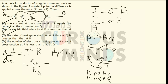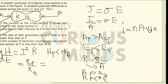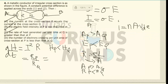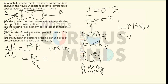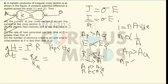Option D states the number of electrons crossing per unit area of cross-section P is less than that of Q. Using the formula I equals N A V_D times e, where A is the area and N is the number of electrons passing through a given volume, N will be inversely proportional to A. Since area of P is more than area of Q, the number of electrons passing through unit volume of P will be less than through Q. So option D is also correct.